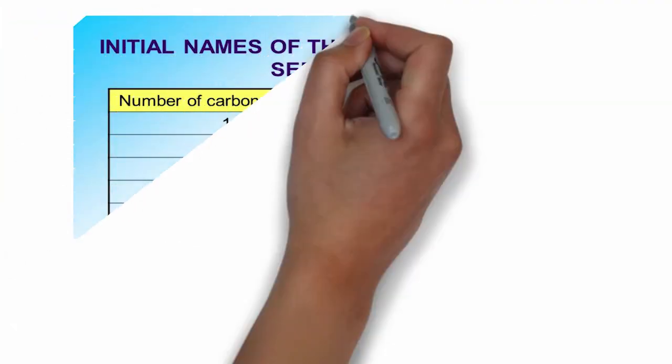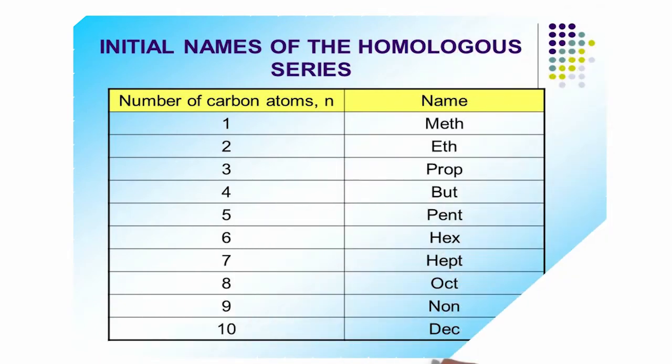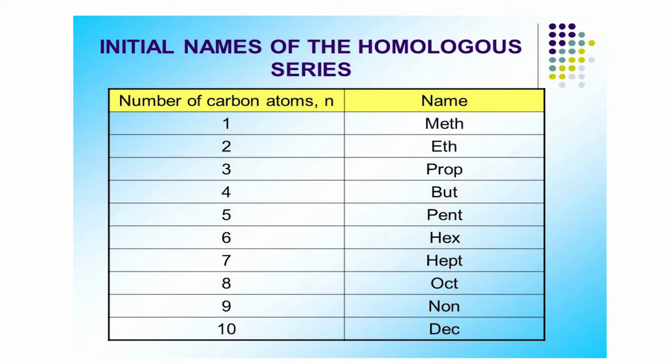To name the homologous series, you memorize the prefix based on the number of carbon atoms: 1 carbon = meth, 2 = eth, 3 = prop, 4 = but, 5 = pent, 6 = hex, 7 = hept, 8 = oct, 9 = non, and 10 = dec. So meth, eth, prop, and but are the initial prefix names of the homologous series.